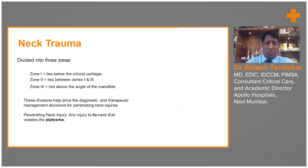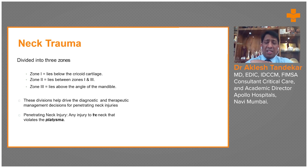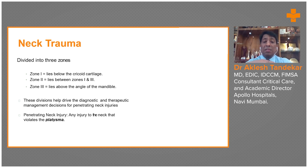Looking at neck trauma, it is divided into three zones. Zone one injuries are below the cricoid cartilage — below the thyroid cartilage we have the cricoid cartilage, and any injuries up to the cricoid cartilage are called zone one. Zone two is between zone one and zone three. Zone three is above the angle of the mandible. Injuries above the angle of the mandible very likely involve oropharyngeal, nasal, eye, and brain injuries.